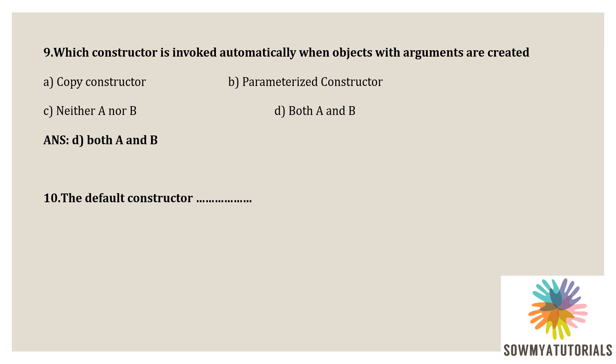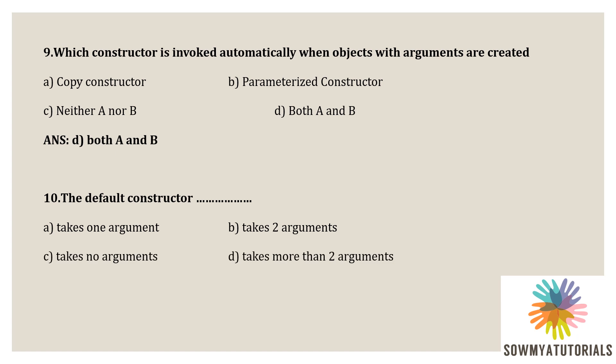Next question: the default constructor is — Options: A) takes one argument, B) takes two arguments, C) takes no arguments, D) takes more than two arguments. The correct answer is takes no arguments, because the default constructor does not accept any arguments. It is called a zero argument constructor, also known as the default constructor.